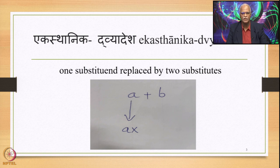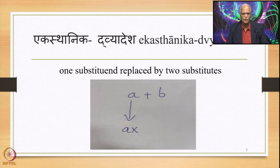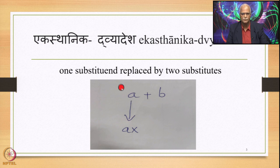and several instances such as Shtutva Sandhi, Anusvara Sandhi, Varasavarana Sandhi, Anunasika Sandhi, etc. Now we are focused on Ekasthanika Dvyaadesha, where there is one substituent which is replaced by two substitutes.